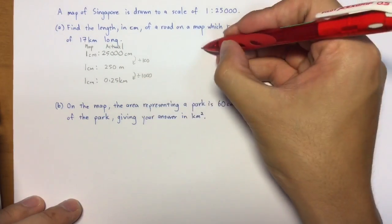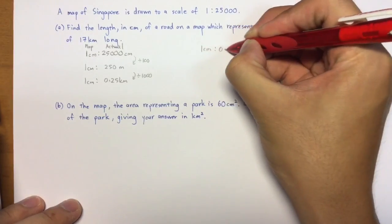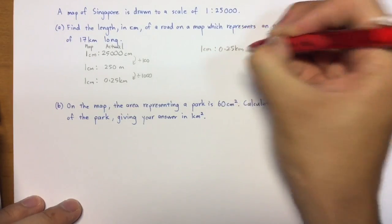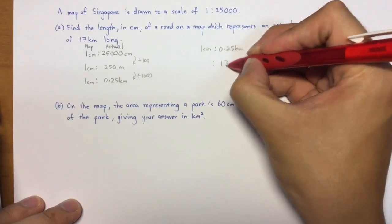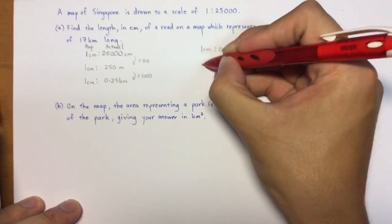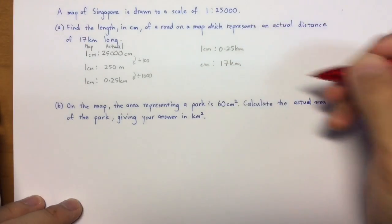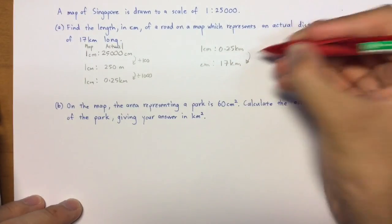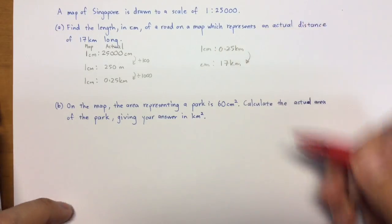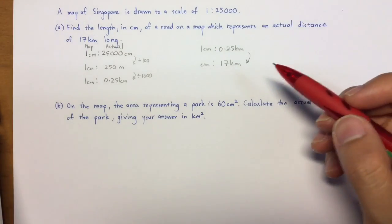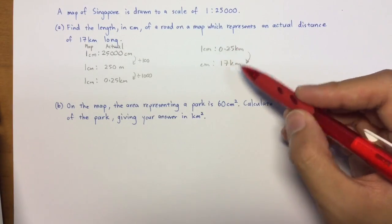So now, I'm going to rewrite it here. I want to know when it's 17 kilometers, how many cm it is here. So, basically, this is a question on ratio. What do I do to multiply 0.25 to 17?